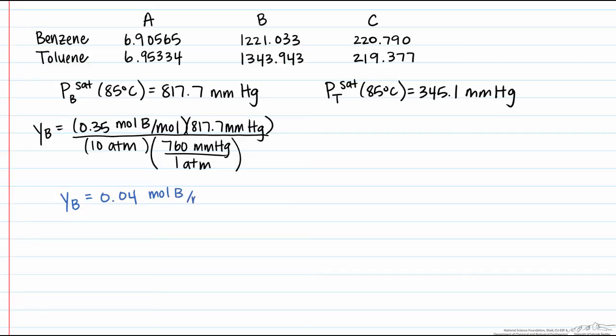However, we have to be careful. We can't say that y sub t equals 1 minus y sub b, because we still have nitrogen in the gas phase. In the liquid phase we can do that, x sub t equals 1 minus x sub b, but here you have to calculate both your y sub b and your y sub t.